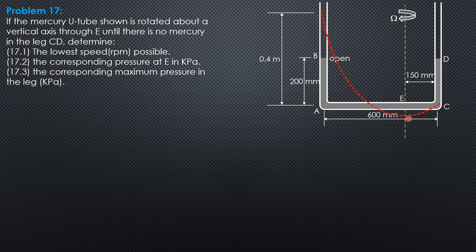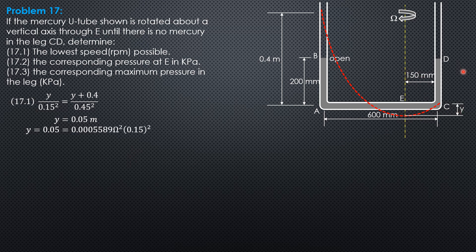And we will call the distance from vertex, vertical distance from vertex to E as Y, and we apply squared property of parabola. Y as to 0.15 square equals y plus 0.4 as to 0.45 square. Solving for Y, Y is 0.05 meter. Then we use Y or H equals 0.0005589 omega square times 0.15 square. So omega minimum is 63.06 revolutions per minute.